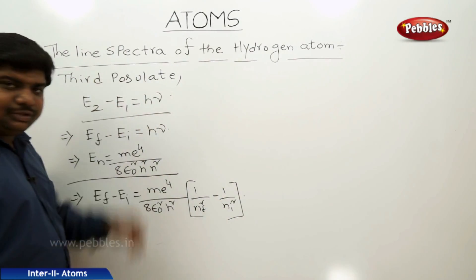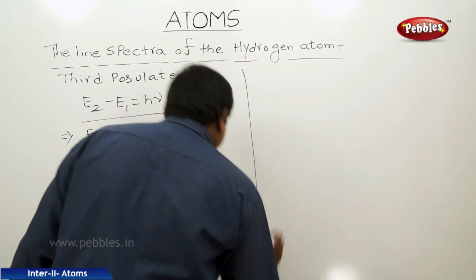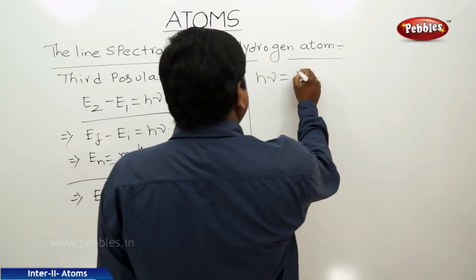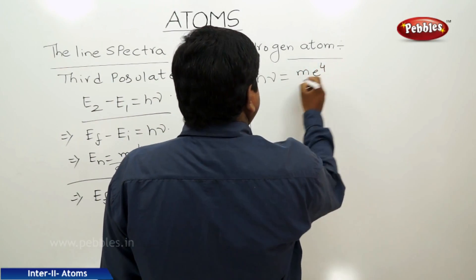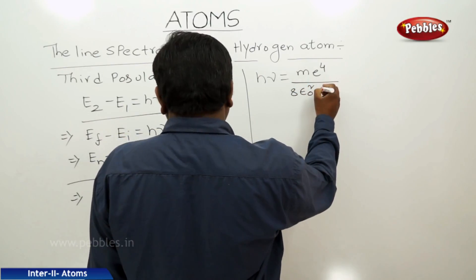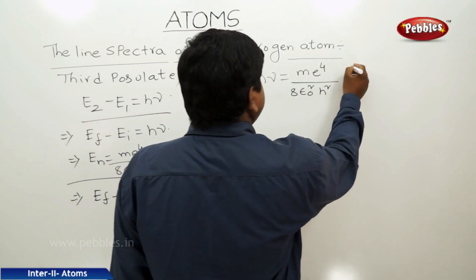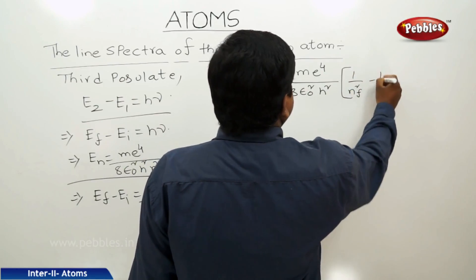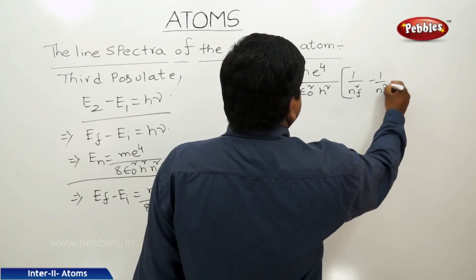This whole is equal to h nu. Therefore, h nu equals m e⁴ by 8 epsilon naught squared h squared into 1 by nf squared minus 1 by ni squared.